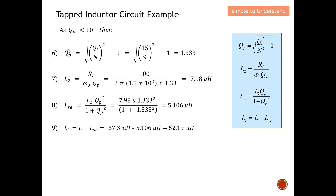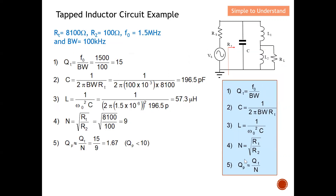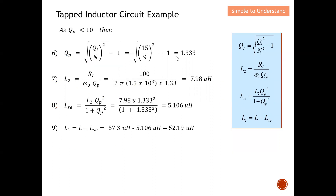Since Qp is less than 10, I cannot use the simplified formulas — I need a more accurate calculation. There are four additional steps. First, recalculate Qp using the more accurate formula, giving a new Qp = 1.333. Next, calculate L2: L2 = RL over (ω₀ × Qp), where RL = 100 ohms, ω₀ = 2πf, and Qp = 1.333 (the new value — do not substitute the old value). This gives L2 = 7.98 microhenries.